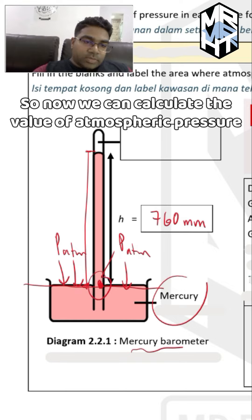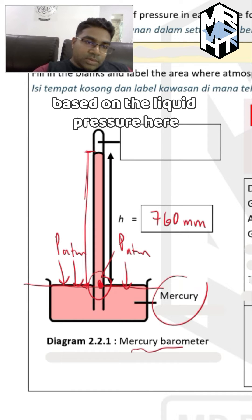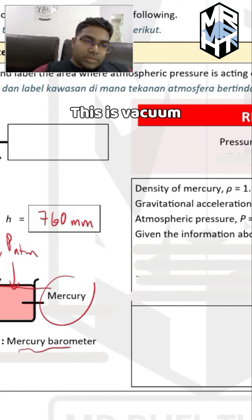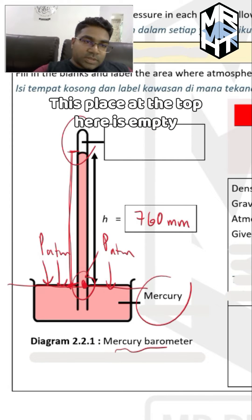So now we can calculate the value of atmospheric pressure based on the liquid pressure here. This is vacuum. This place at the top here is empty.